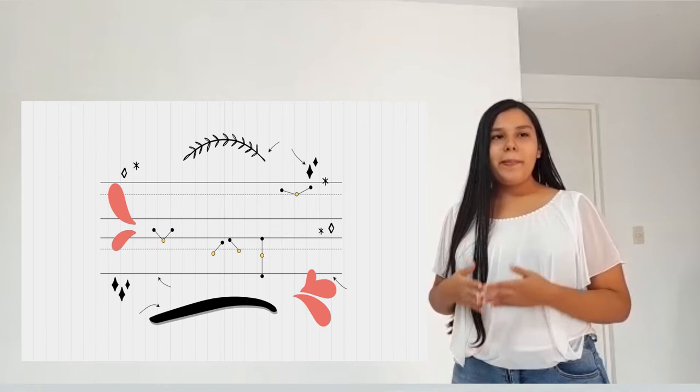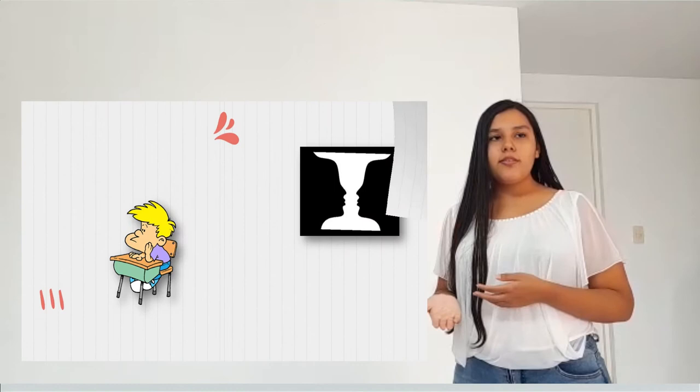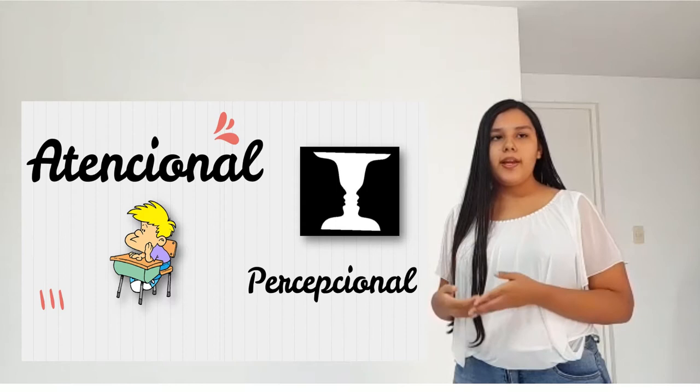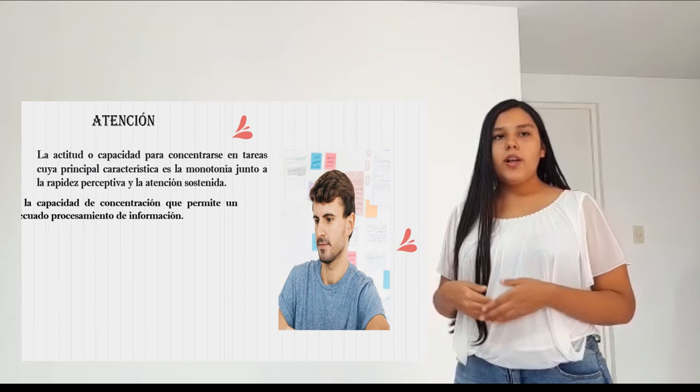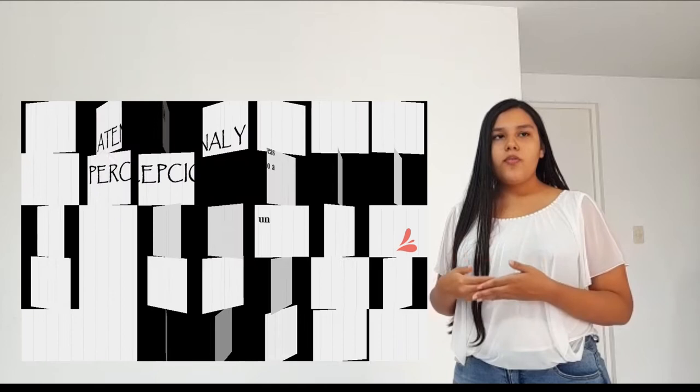El test de Atención Toulouse-Piéron permite evaluar de forma conjunta dos dimensiones aptitudinales que han sido definidas por separado: la percepción y la atención. En concreto, puede apreciarse la aptitud y capacidad para concentrarse en tareas cuya principal característica es la monotonía, junto a la rapidez perceptiva y la atención sostenida. Es decir, puede evaluar la resistencia a la fatiga, la rapidez, persistencia perceptiva y la concentración.